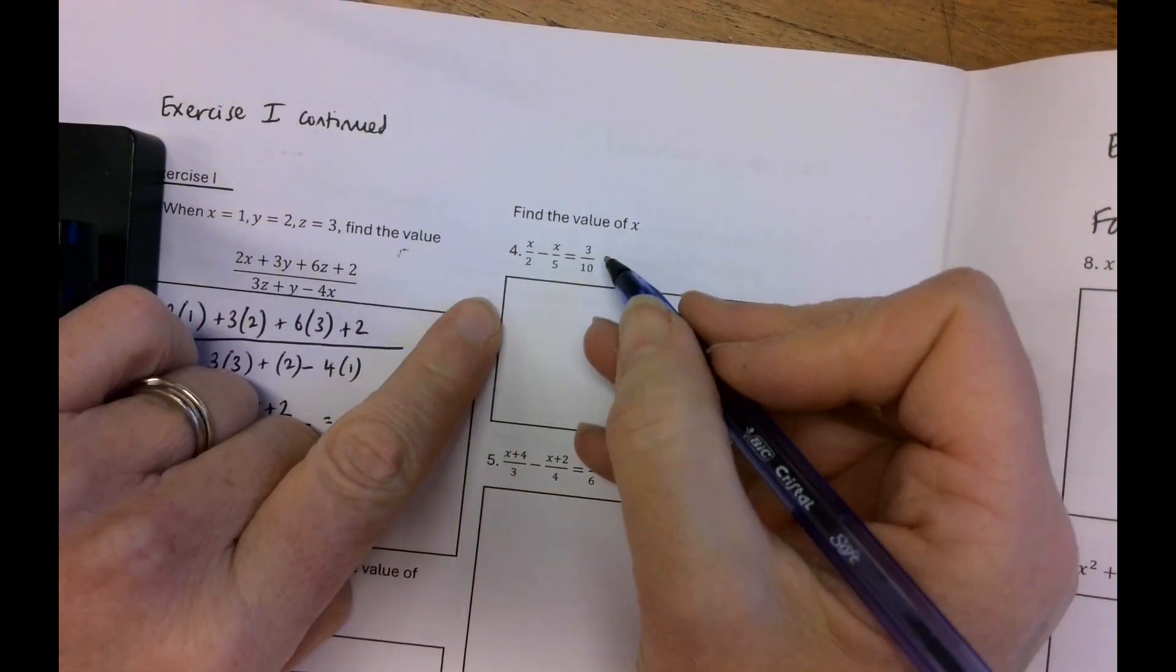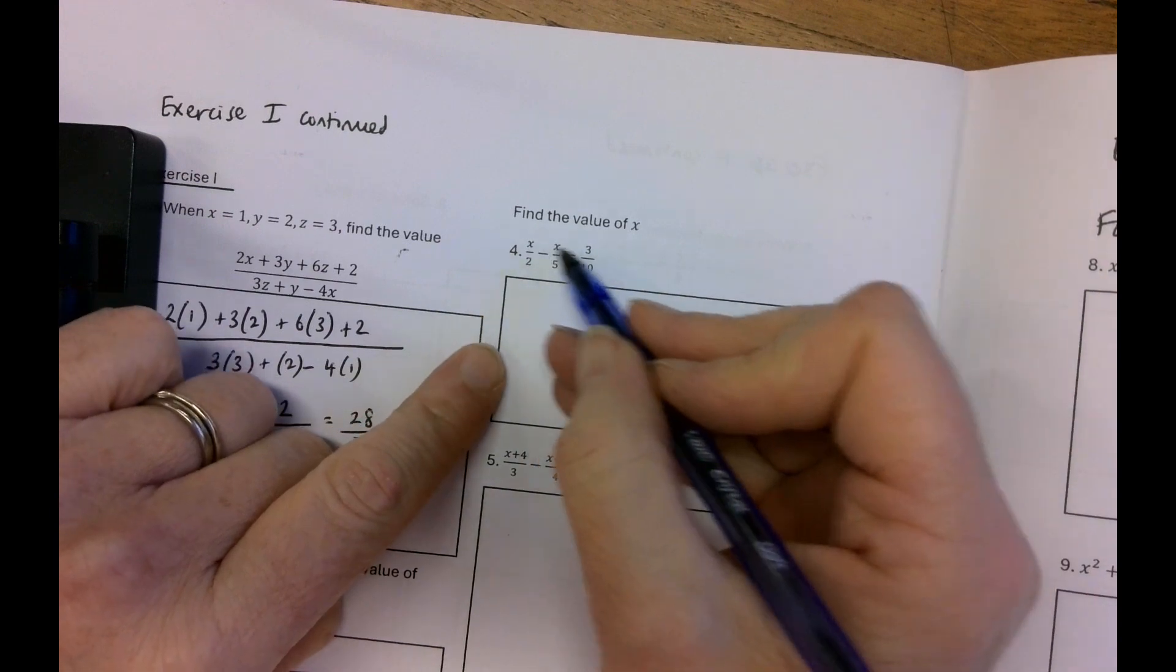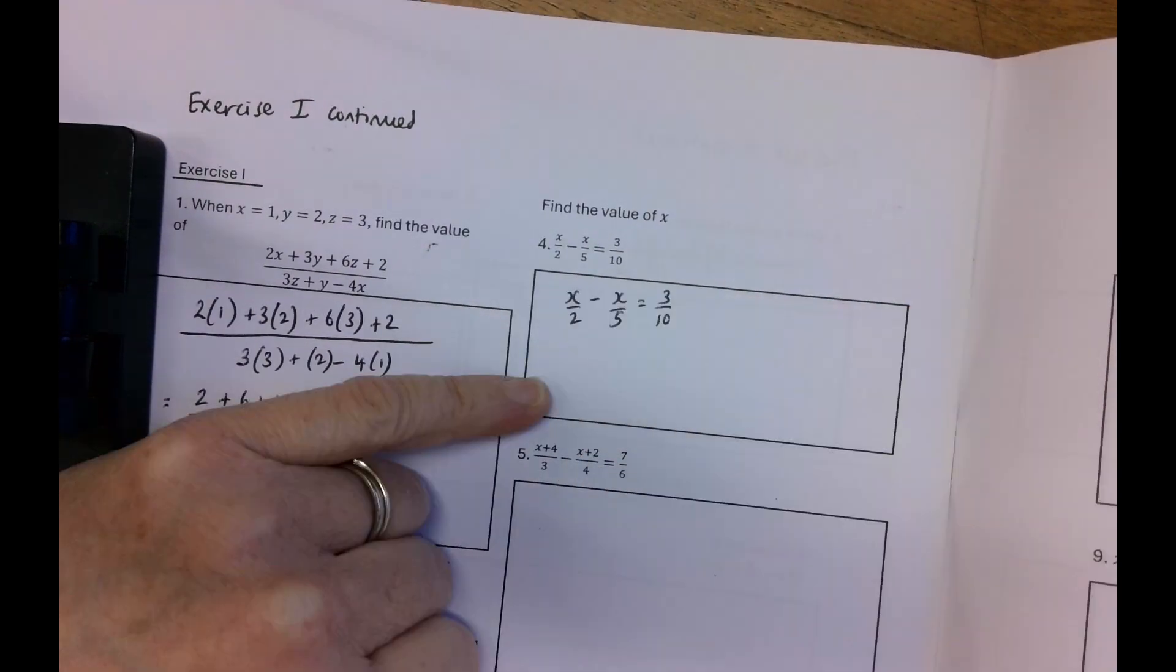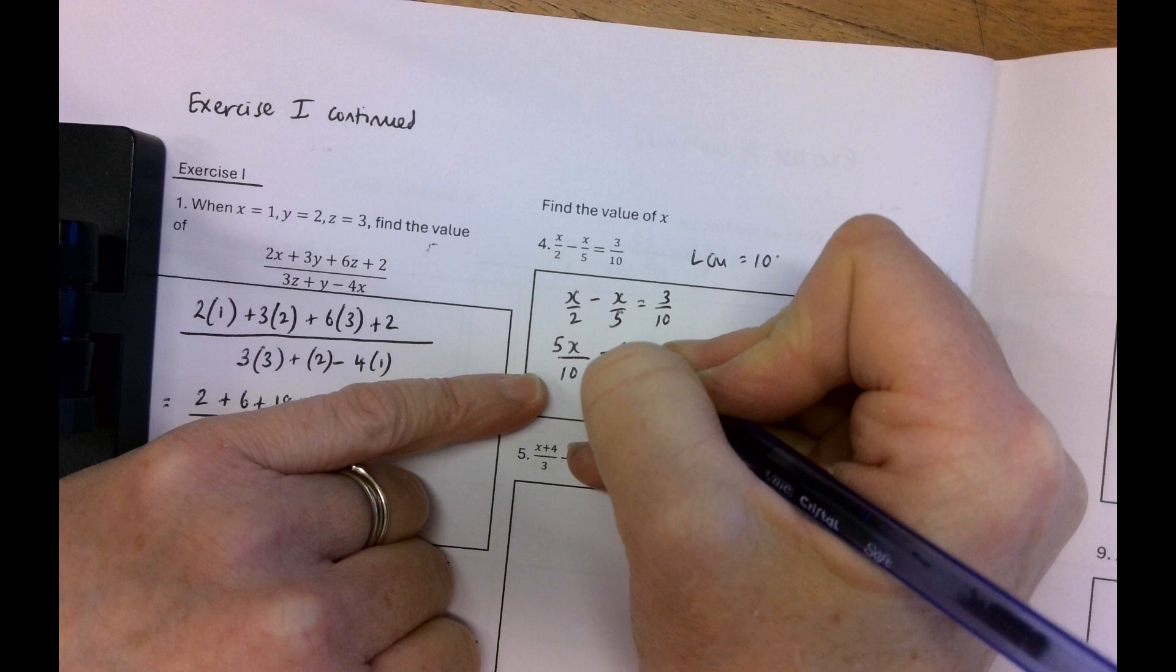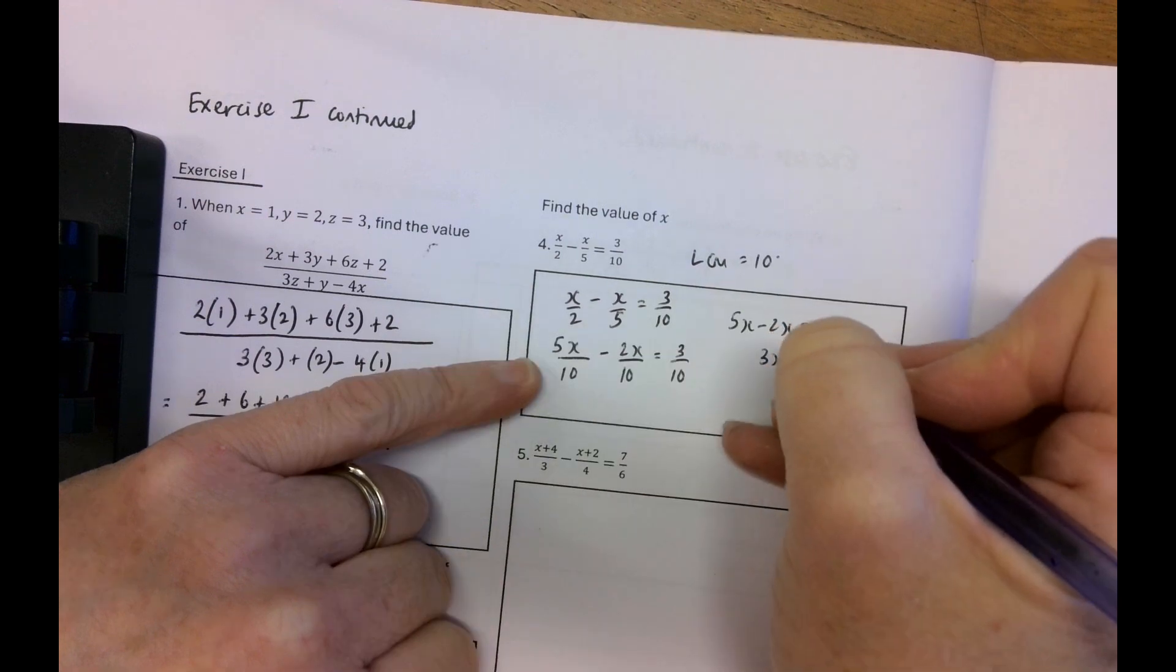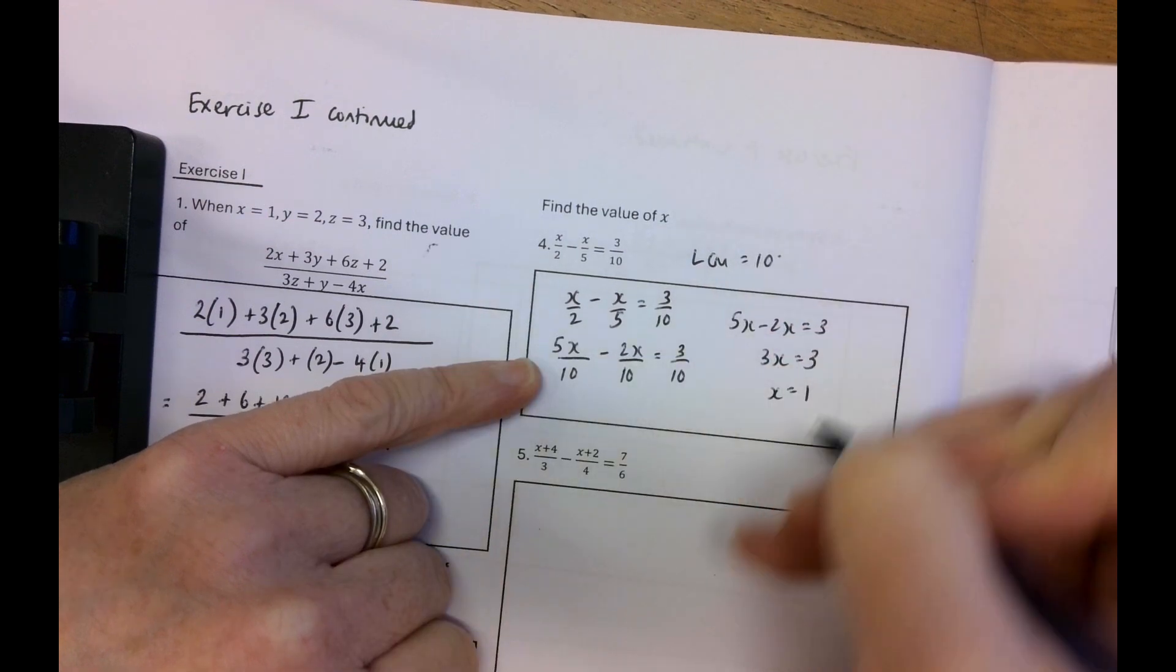Find the value of x. So this is an equation. Okay there's x's and there's an equals. So x over 2 minus x over 5. So the easiest is to write everything over an LCM and the LCM there is going to be 10. So it's going to be 2 goes into 10 five times. So 5x minus 2x is equal to 3 over 10. So 5x minus 2x is equal to 3. So 3x is equal to 3. So x is equal to 1.